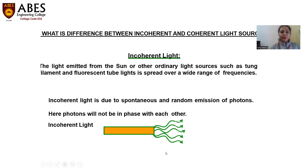Looking at the diagram: for the incoherent light source, all the light rays, or the group of photons, they are running here and there — doing random motion. They are not concentrated at a particular direction. This is what incoherent light is.